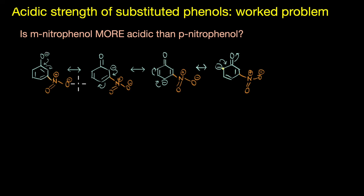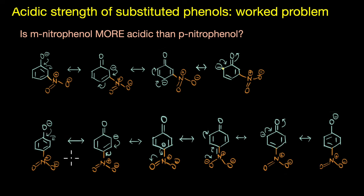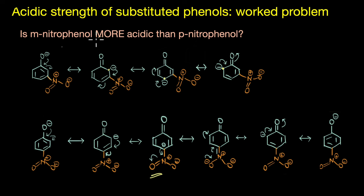The nitro group at the meta position has no effect on stabilizing the negative charge. But in the case of paranitrophenol, the electron withdrawing nitro group is effectively able to draw the electron density away from the benzene ring. Looking at the resonance structures, in the metanitrophenoxide ion the negative charge delocalizes onto the less electronegative carbon atoms at the para and ortho positions, whereas in paranitrophenol the negative charge delocalizes onto the more electronegative oxygen atom. This is why metanitrophenol is less acidic than paranitrophenol — the conjugate base is more stable in the case of paranitrophenol.